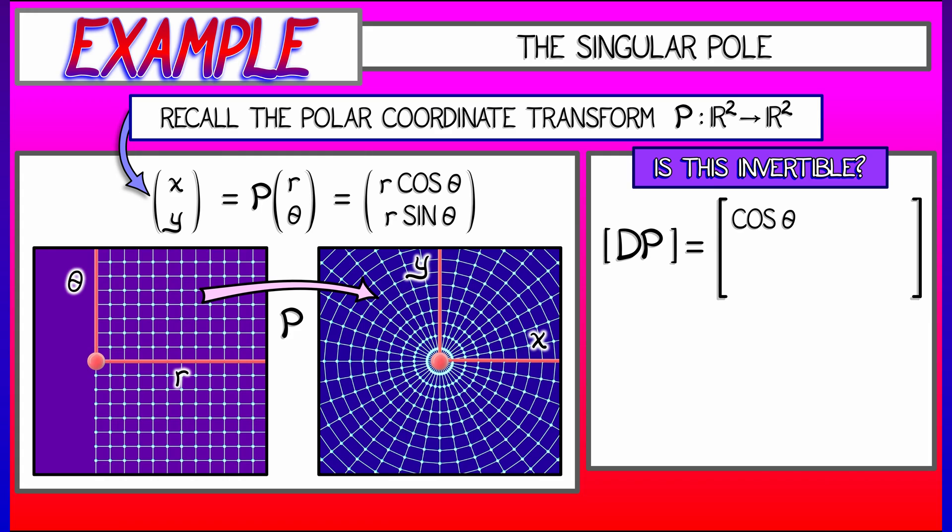I take the partials in r, that's cosine theta, sine theta. I take the partials in theta, that's minus r sine theta, r cosine theta.